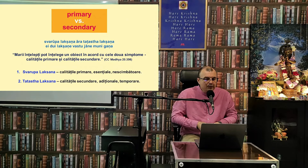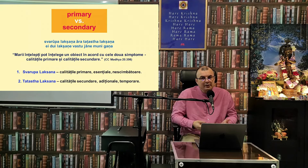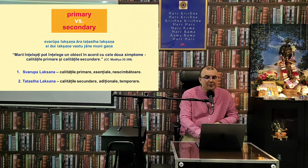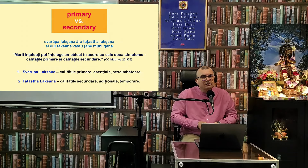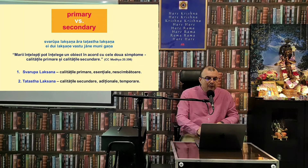Tatasta Lakshana sunt calitățile secundare, temporare, adiționale. De exemplu, Svarupa Lakshana apei este lichiditatea — apa este lichidă. Dar uneori apa devine solidă sau devine abur. Aceea nu este o stare firească a apei; este o calitate secundară.